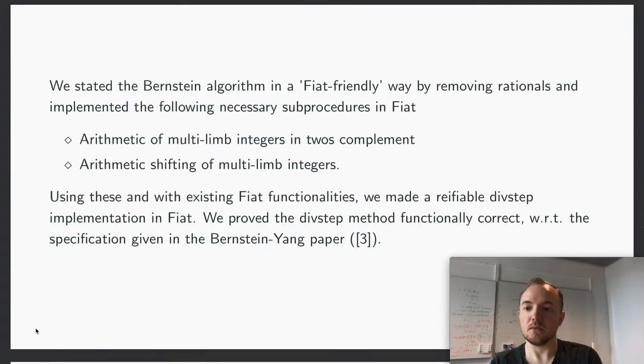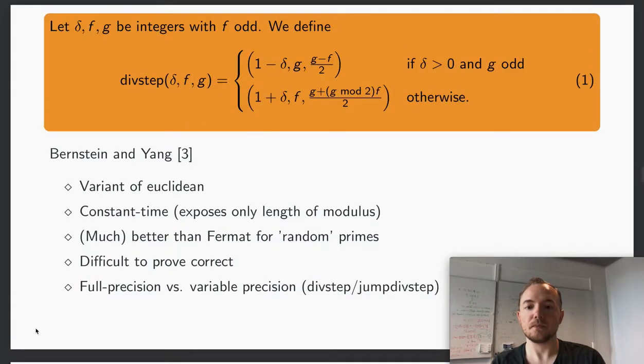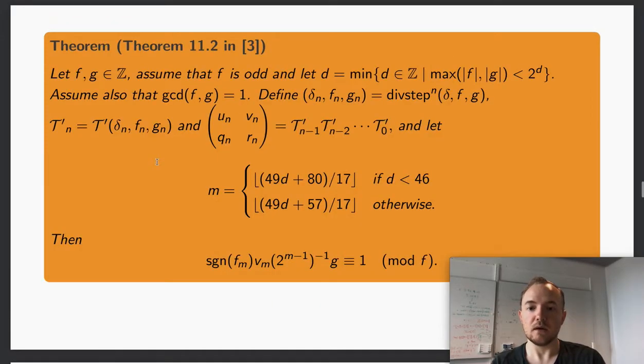What is the current status? We stated the algorithm in a Fiat-friendly way. In the paper it used rationals which Fiat does not support, so we made an implementation in Coq. To be able to implement the division step, g and f are both multi-limb integers in the same size as the prime that we are working with, and we need them signed. There's a subtraction here and we need to be able to divide them or shift them.